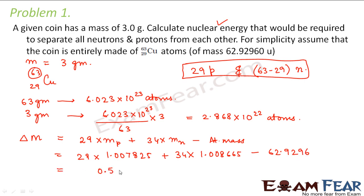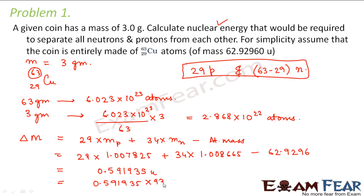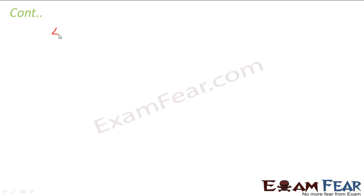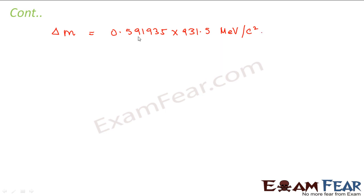This comes out to be 0.591935 atomic mass units. Now we convert it into mega electron volts by multiplying with 931.5 MeV/c². Therefore, mass defect = 0.591935 × 931.5 MeV/c². This is the mass defect for one atom of copper.